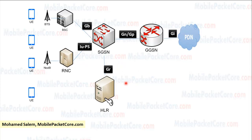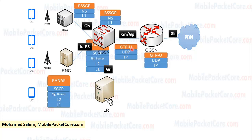First, we should know that in mobile networks, every interface between two network nodes has a unique interface name, and this interface represents the protocols used in the communication between those nodes.